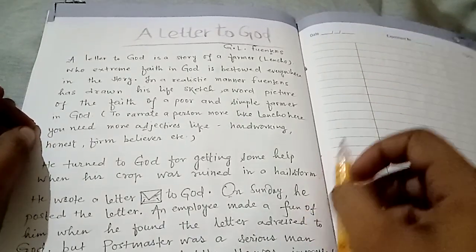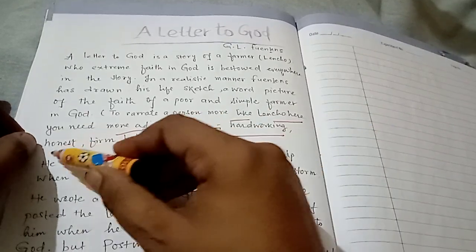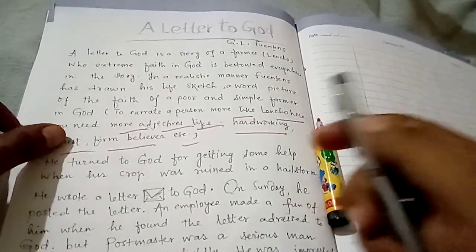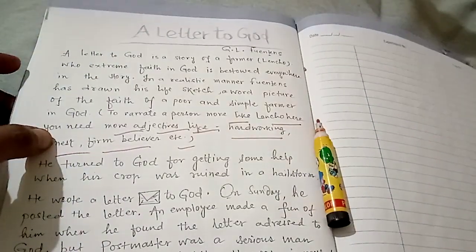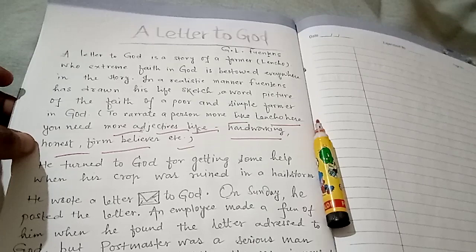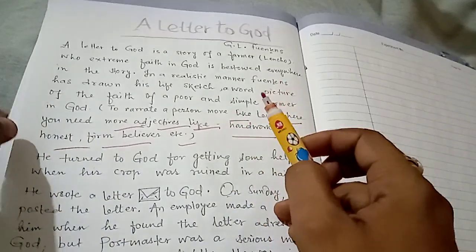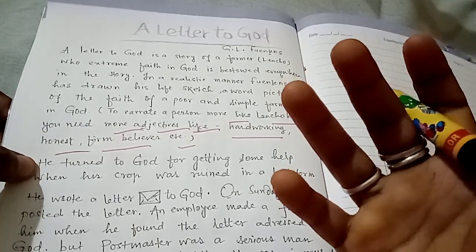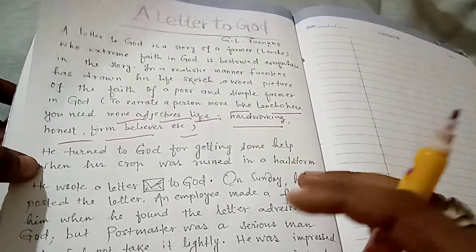In a realistic manner, the writer G.L. Fuentes has drawn his life sketch, a word picture of the faith of a poor and simple farmer, faith in God. To narrate a person more, like Lencho, here, you need more adjectives like hardworking, honest, firm believer, etc. So, whenever you want to describe any noun or pronoun, what do you need? Adjectives. Lots of adjectives. Or required adjectives. So, you can see that I have taken here, hardworking, honest, firm believer. Three adjectives. So, these three adjectives can help you to form more sentences about Lencho. I am just trying to show you how to make notes, how to revise, how to imbibe into the chapter, and how to tag the concept in your brain so that no need to learn question and answer. Just practice of writing is required.